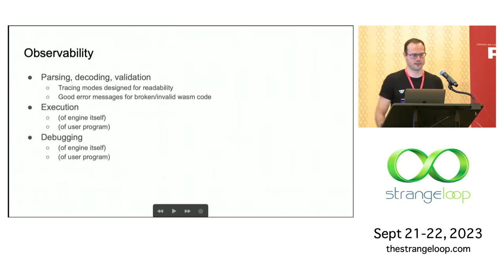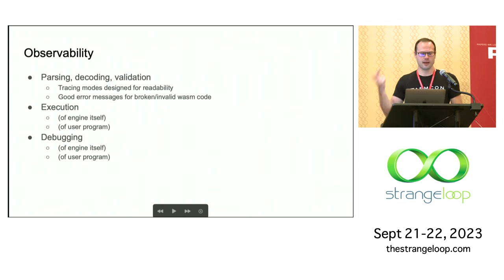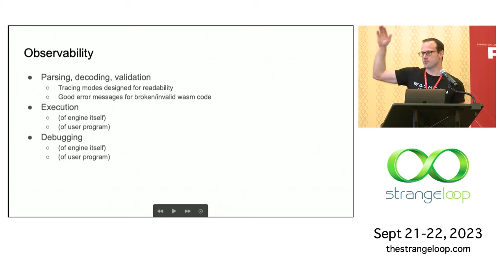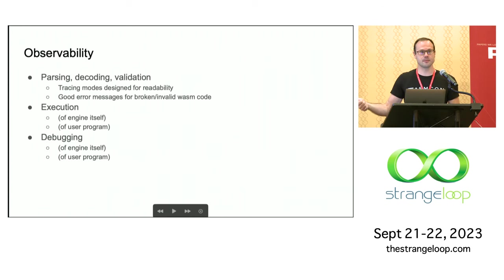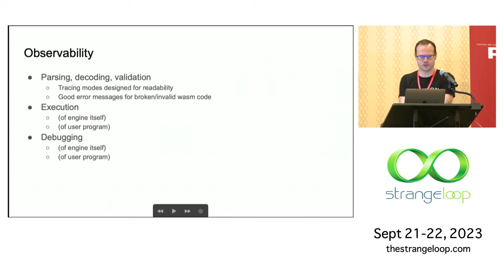So what does observability mean? WebAssembly, being a code format, goes into the software virtual machine. The things that happen when you take the format and turn it into an internal representation — parsing the code, decoding it, and validating the type system — are all things that you may want to make observable. In particular, if you're a language designer who's written a compiler generating WebAssembly, you'll probably get it wrong. So you want the engine to tell you exactly what went wrong and where. Observability boils down to having nice tracing modes and telling you if you have a type error, so you can figure out what's wrong with your compiler.